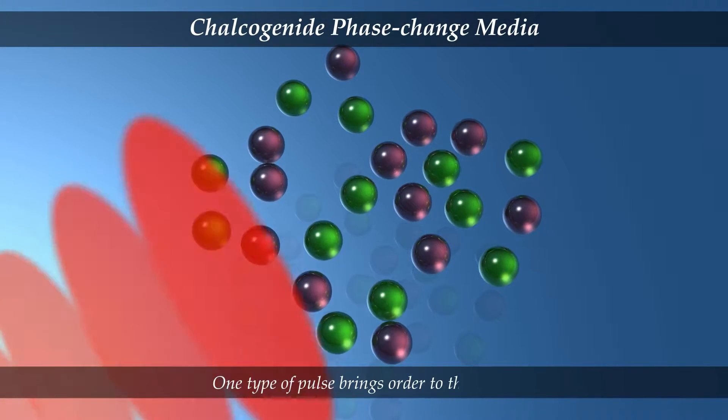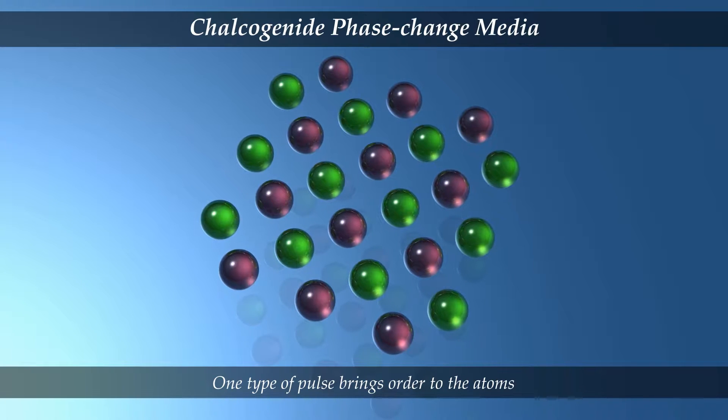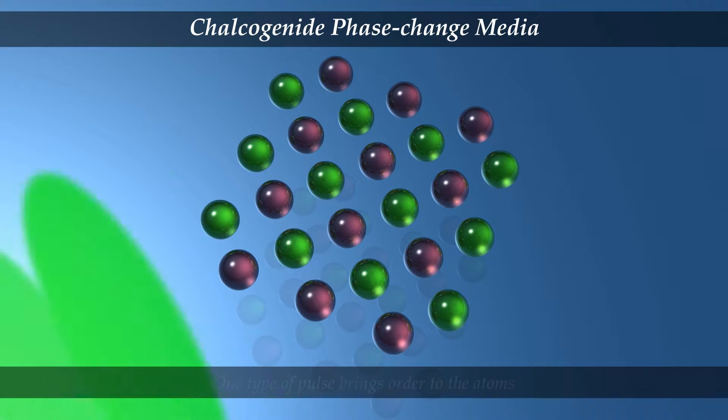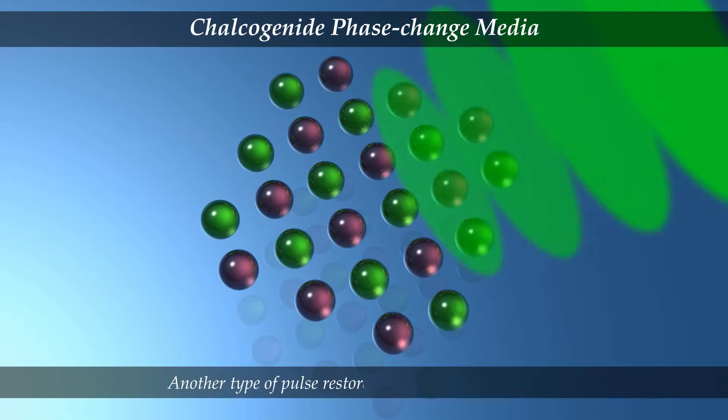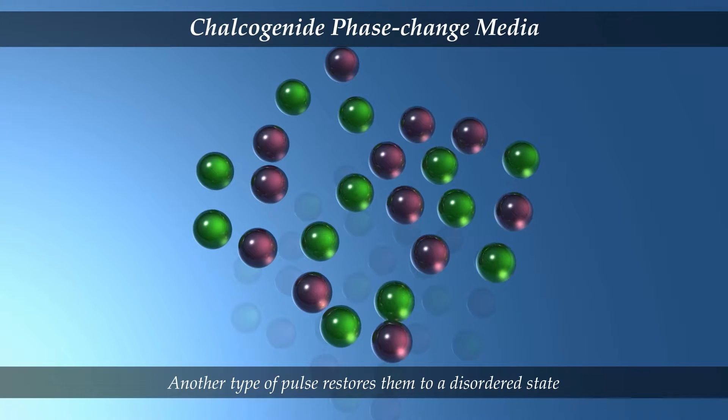When you shine a laser on these glasses, one type of laser pulse will cause the atoms to become ordered. A different type of pulse will switch them back to a disordered state.